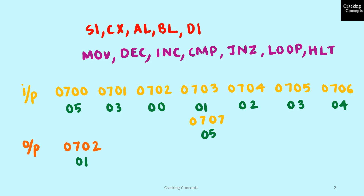SI and DI will be used as the source and destination index registers, which will be used to point to a particular location in memory. CX will be the count register. AL and BL will be the registers where the values to be compared are stored. AL will contain the value which is to be searched for, and BL will contain the values pointed by the corresponding index registers.